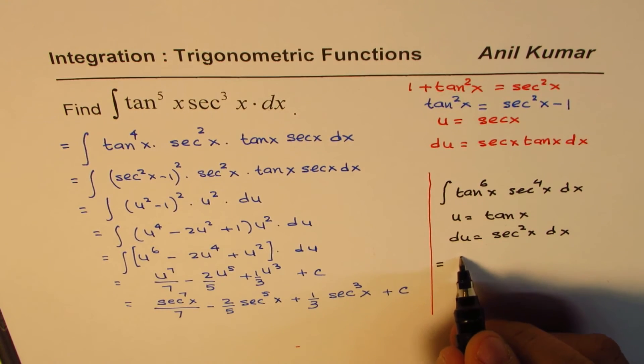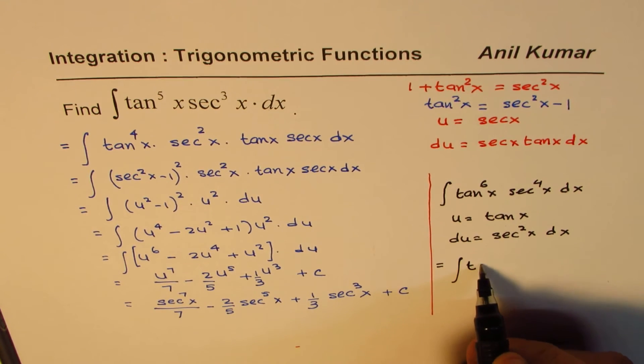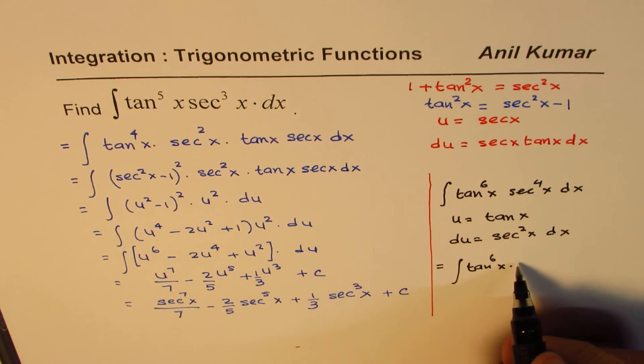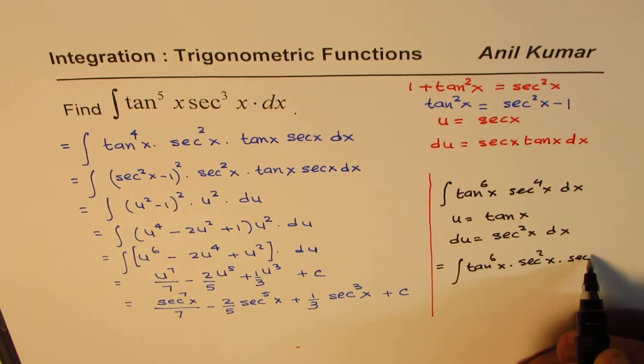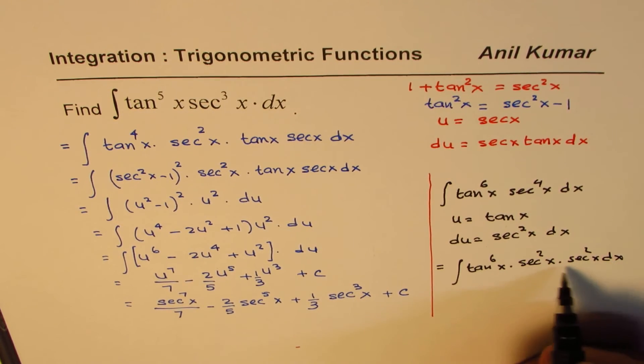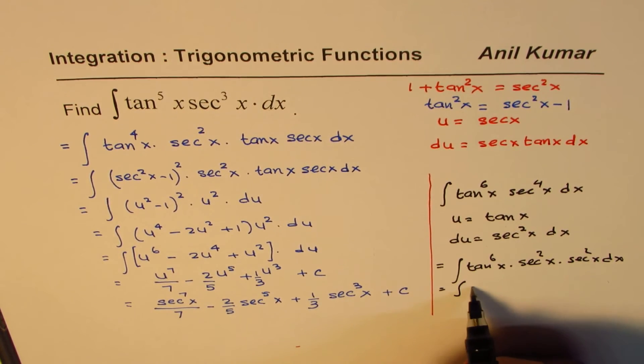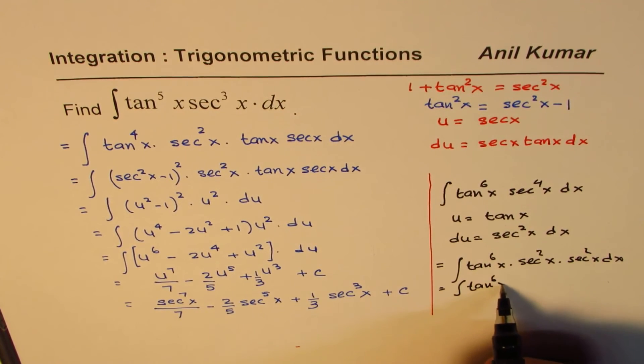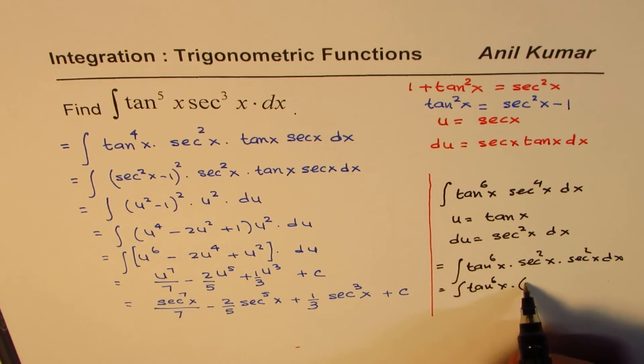Now since we can keep one secant square x separate, you could always write this as change secant square into tan x. You could write this as tan to the power of 6 x times, instead of this we could write this as secant square x and keep one secant square x with dx. And now we can write secant square x as 1 plus tan square x.